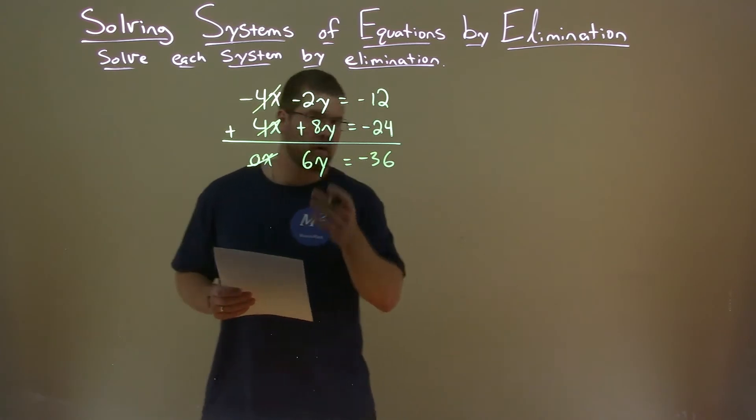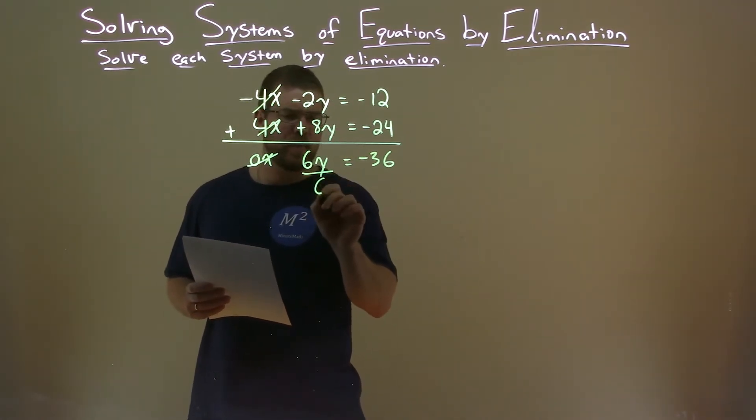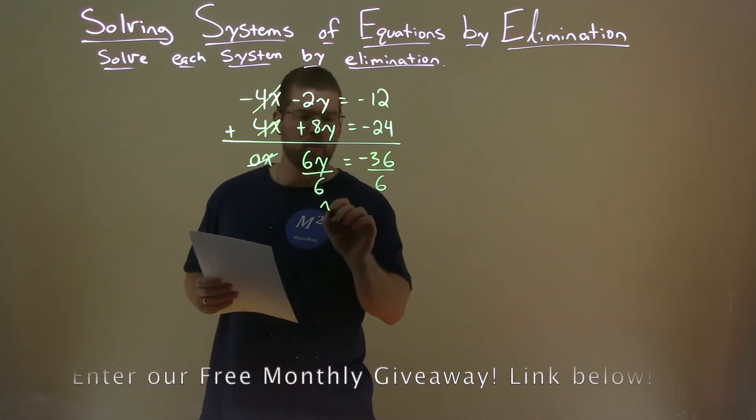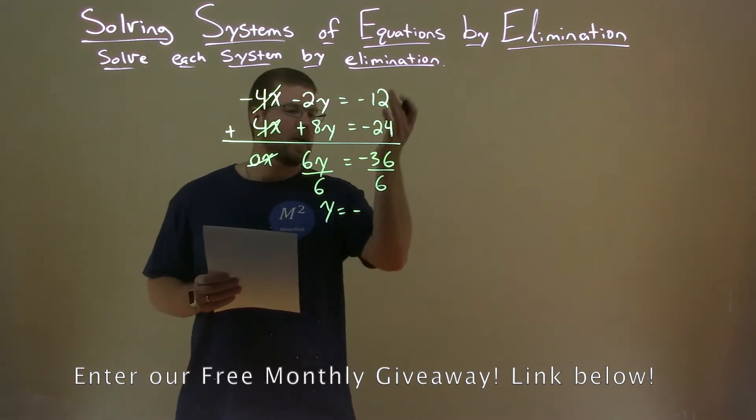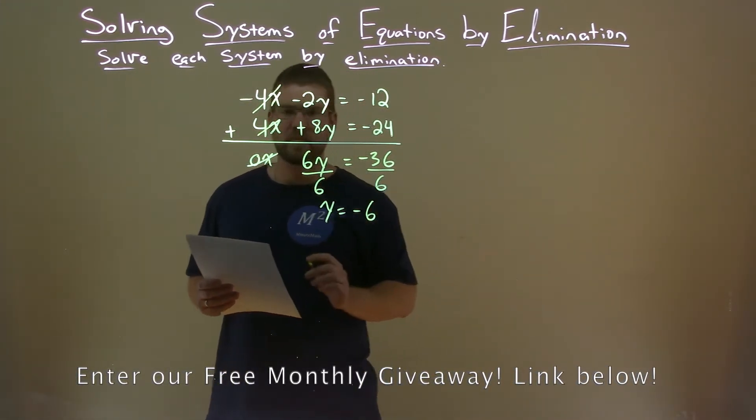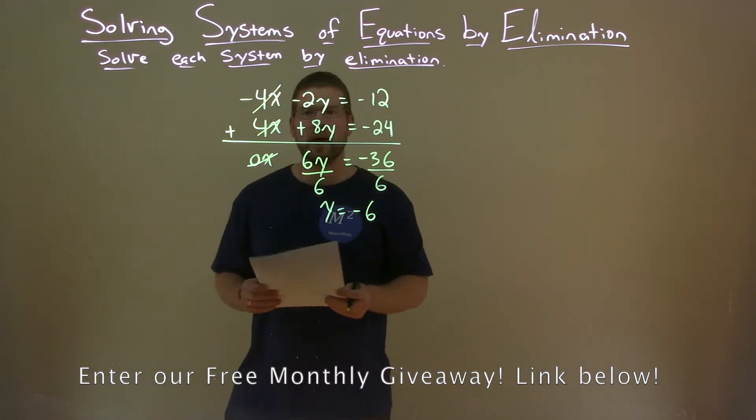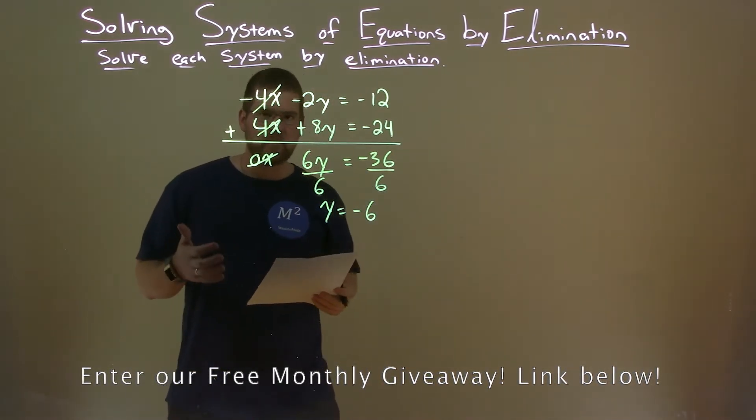Now we solve for y. Divide both sides by 6 here, and we get y equals negative 36 divided by 6 is negative 6. So our y value is negative 6, and we need to now find the x value.